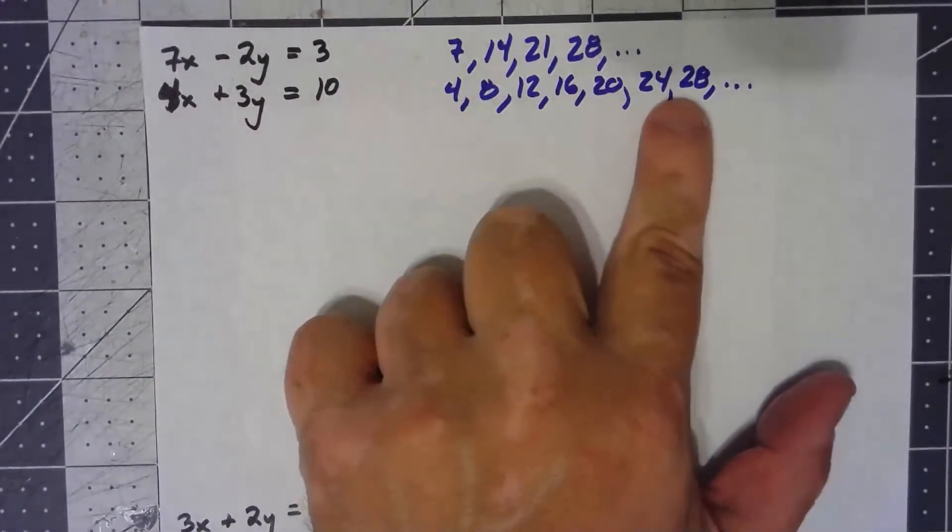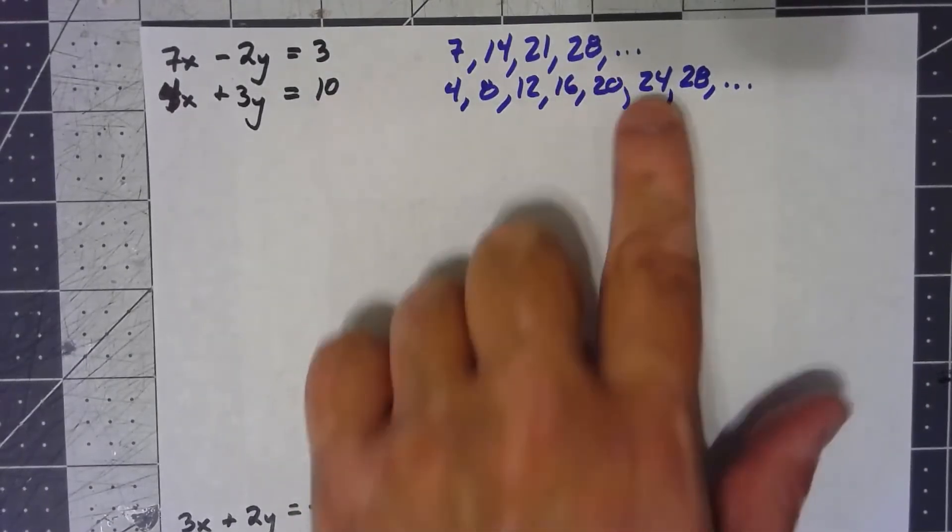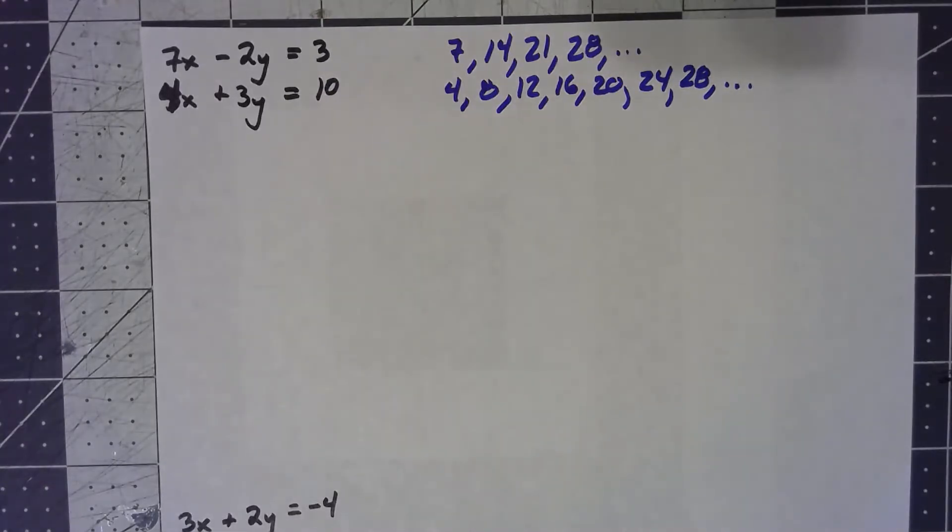As soon as you've got a number that's common to both lists, you can stop writing them. So that's why I stopped each of these at 28. If it doesn't happen by the time you've got the same number in each, it'll never happen.